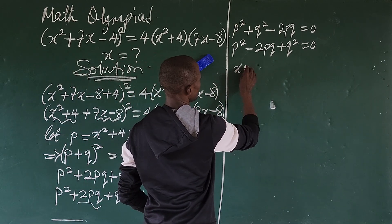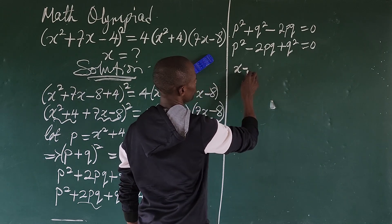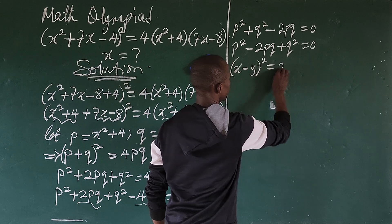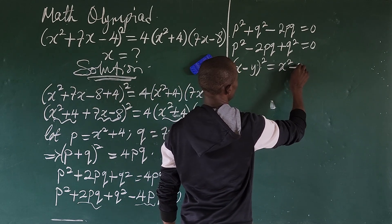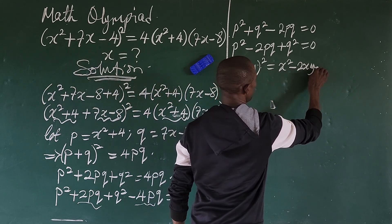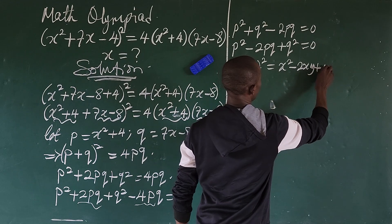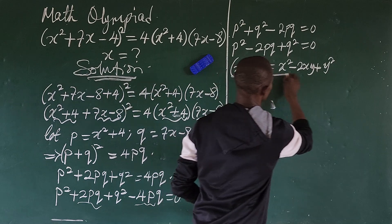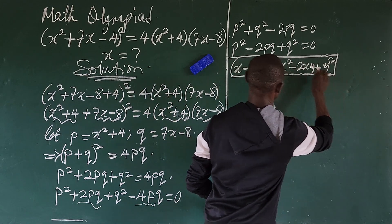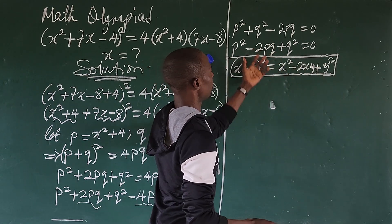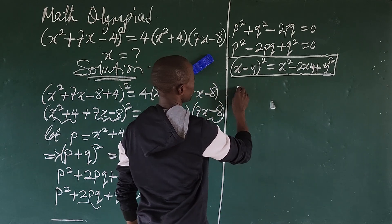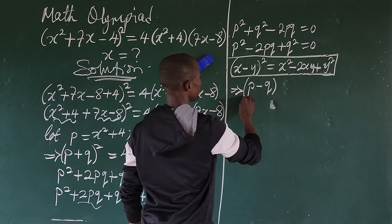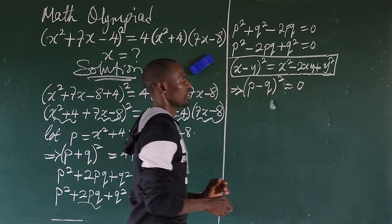Remember that (x - y)² = x² - 2xy + y². Applying this identity here, we can rewrite p² - 2pq + q² = 0 as (p - q)² = 0.